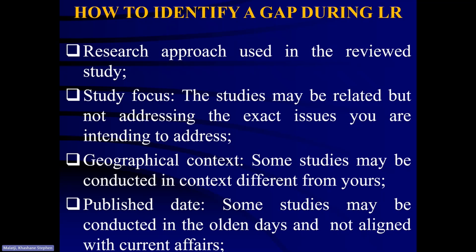You can also use the geographical context to identify the gap during a literature review. Some studies are conducted in a different context which can result in different findings or outcomes. A study conducted in America cannot be used to generalize the findings in South Africa because the geographical contexts are different. You can use the context as a gap and say: this study is related to my study; however, the contexts are completely different, so this current study will be conducted in this particular context.